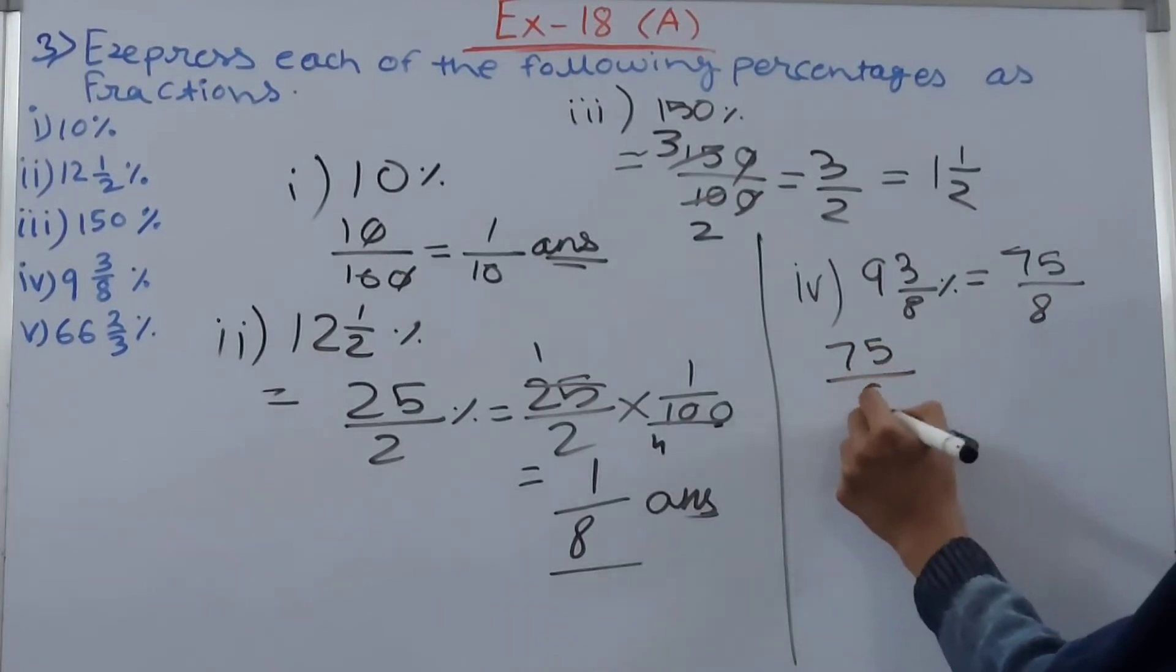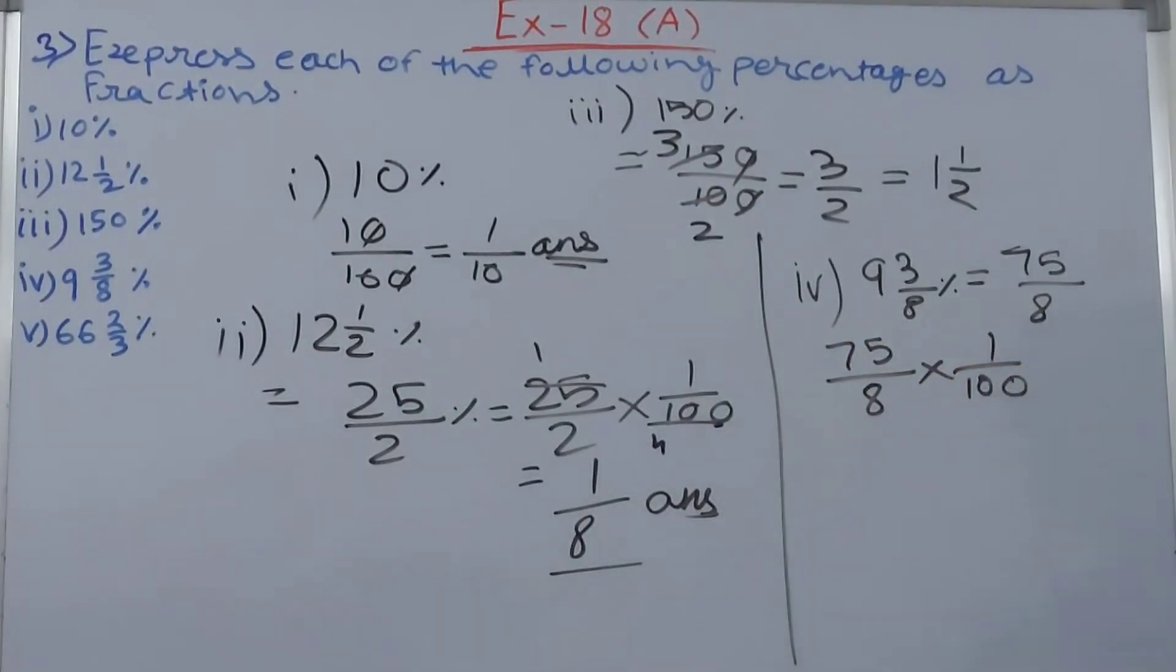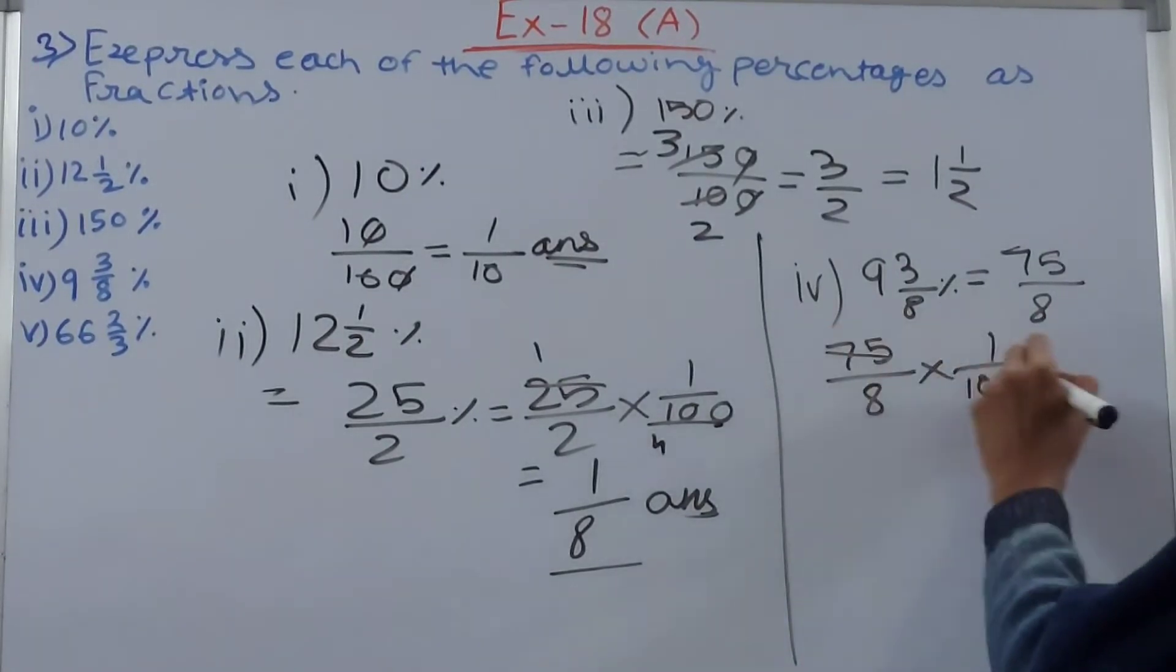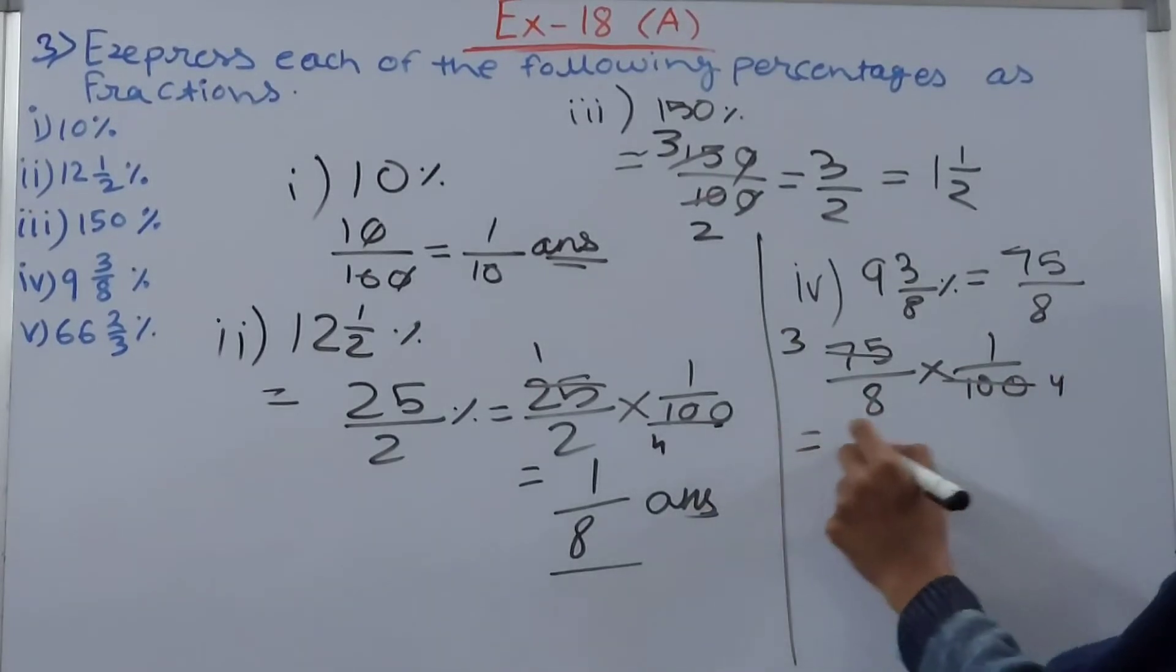So into 1 upon 100, we reciprocate the fraction. So this will be 3 and 4, by 25 I'm cancelling, so we get here 3 upon 8 into 4 that is 32.